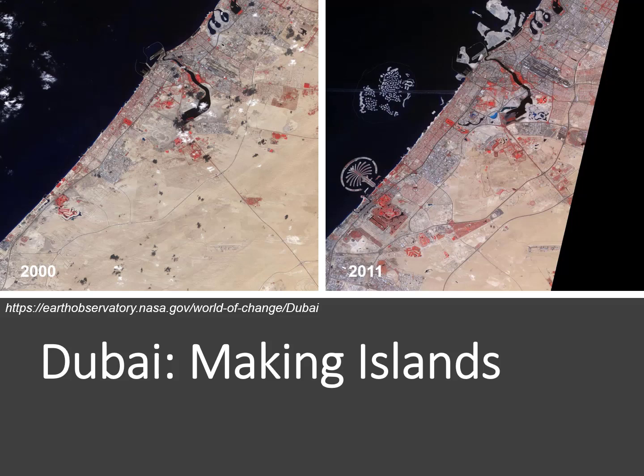Also notable is the speed at which humans have altered the planet. Some have referred to this speed as catastrophic. This is well illustrated by the changing landscape near Dubai, a city in the United Arab Emirates, where man-made islands in the shape of palm trees and the globe have been constructed in less than 10 years.